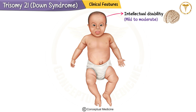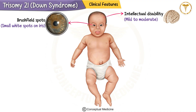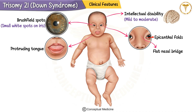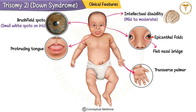They also have distinct facial characteristics, like Brushfield spots, which are small white spots on the iris, epicanthal folds, a flat nasal bridge, and a protruding tongue. These facial features make the condition easily recognizable.